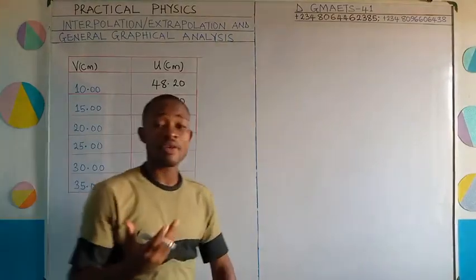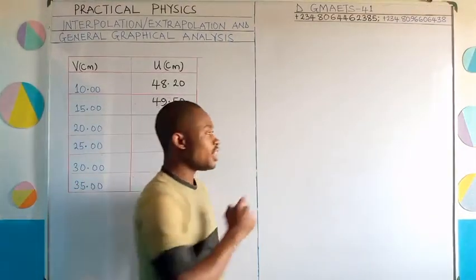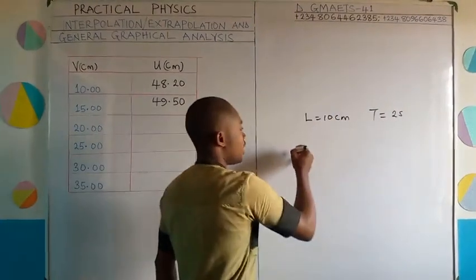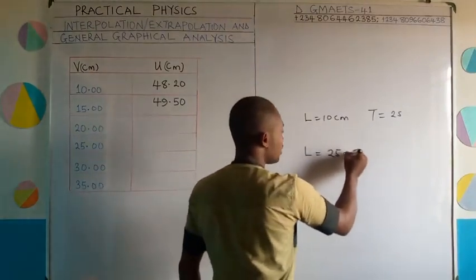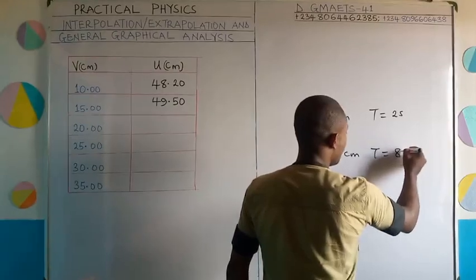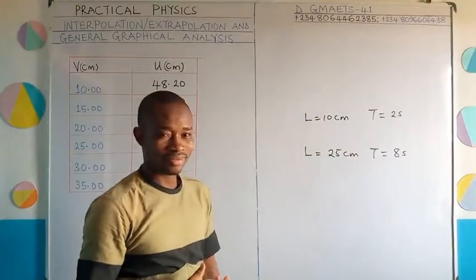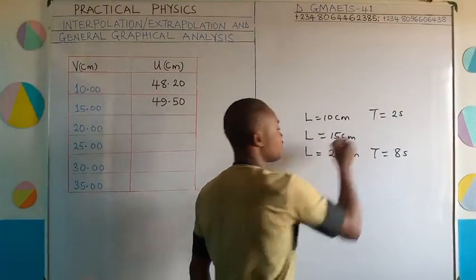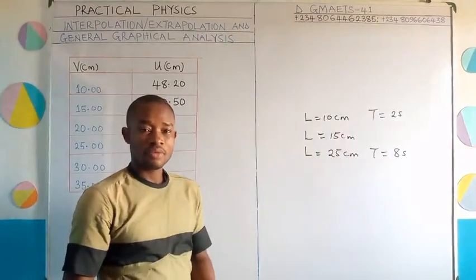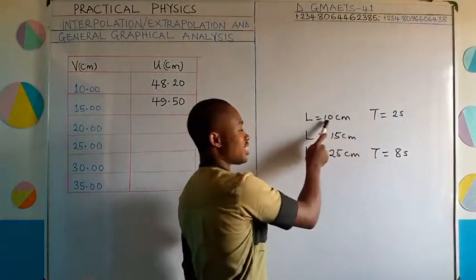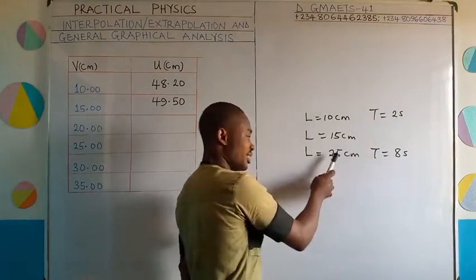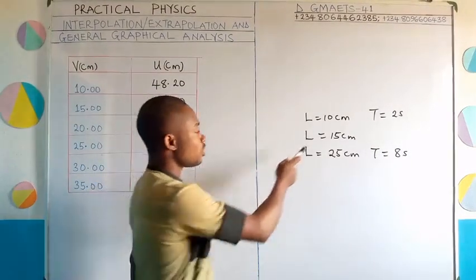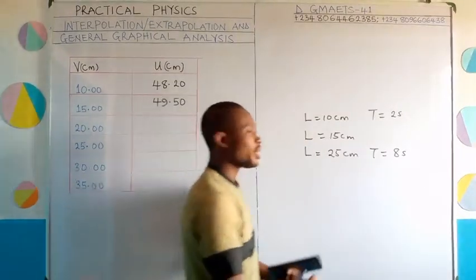Let us assume that you're carrying out a simple pendulum experiment and you are told that for a length of 10 cm the period of oscillation is 2 seconds, and for a length of 25 cm the period of oscillation is 8 seconds. What do you think would be the periodic time if the length were to be 15 cm? Remember, you've carried out the experiment to get a periodic time for 10 cm and for 25 cm — now what would be the periodic time for a length of 15 cm without carrying out the experiment?